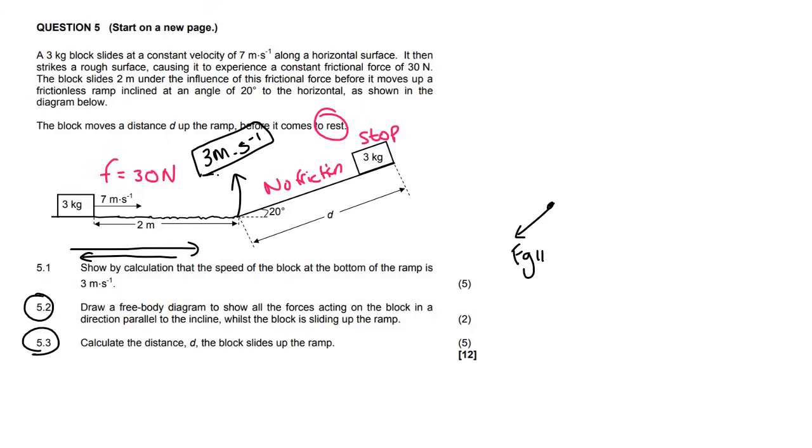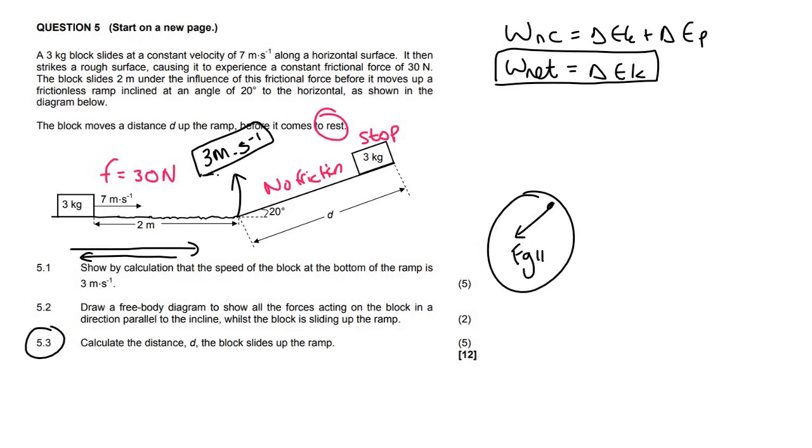It says calculate the distance that the block slides up the ramp. Just to put you guys at ease, because we are on a straight line or a straight surface, there's no curve, you are able to use this formula. I mean, this formula you can always use it, or you can use W_NET equals to change in EK. Remember, the only thing you can't do is use this when you are on a curve. I'm going to use this one again, just because I can tell it's going to be a little bit easier.